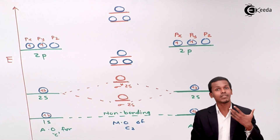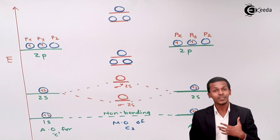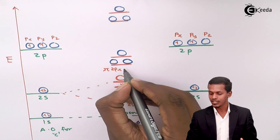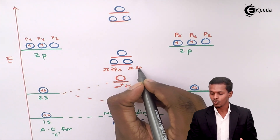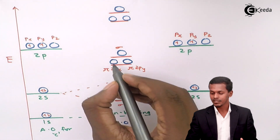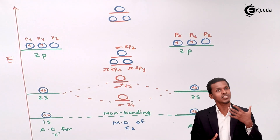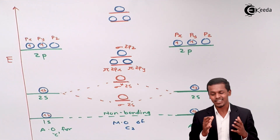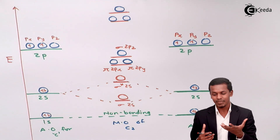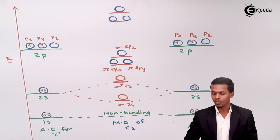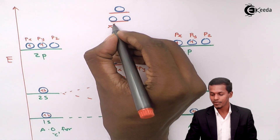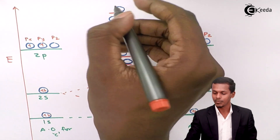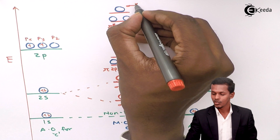Let us designate the molecular orbitals first. The bonding orbitals are: pi 2px, pi 2py, and sigma 2pz — since the pz orbital with unpaired electrons is responsible for forming a sigma bond. The corresponding anti-bonding orbitals are: pi star 2px, pi star 2py, and sigma star 2pz.